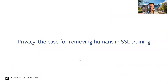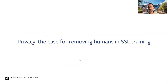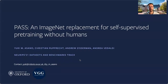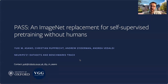Algorithms alone are really only the recipe for a cake — you still need the ingredients, which is the training data. This paper, called PASS: An ImageNet Replacement for Self-Supervised Pre-Training Without Humans, was presented at NeurIPS this year at the datasets and benchmarks track.